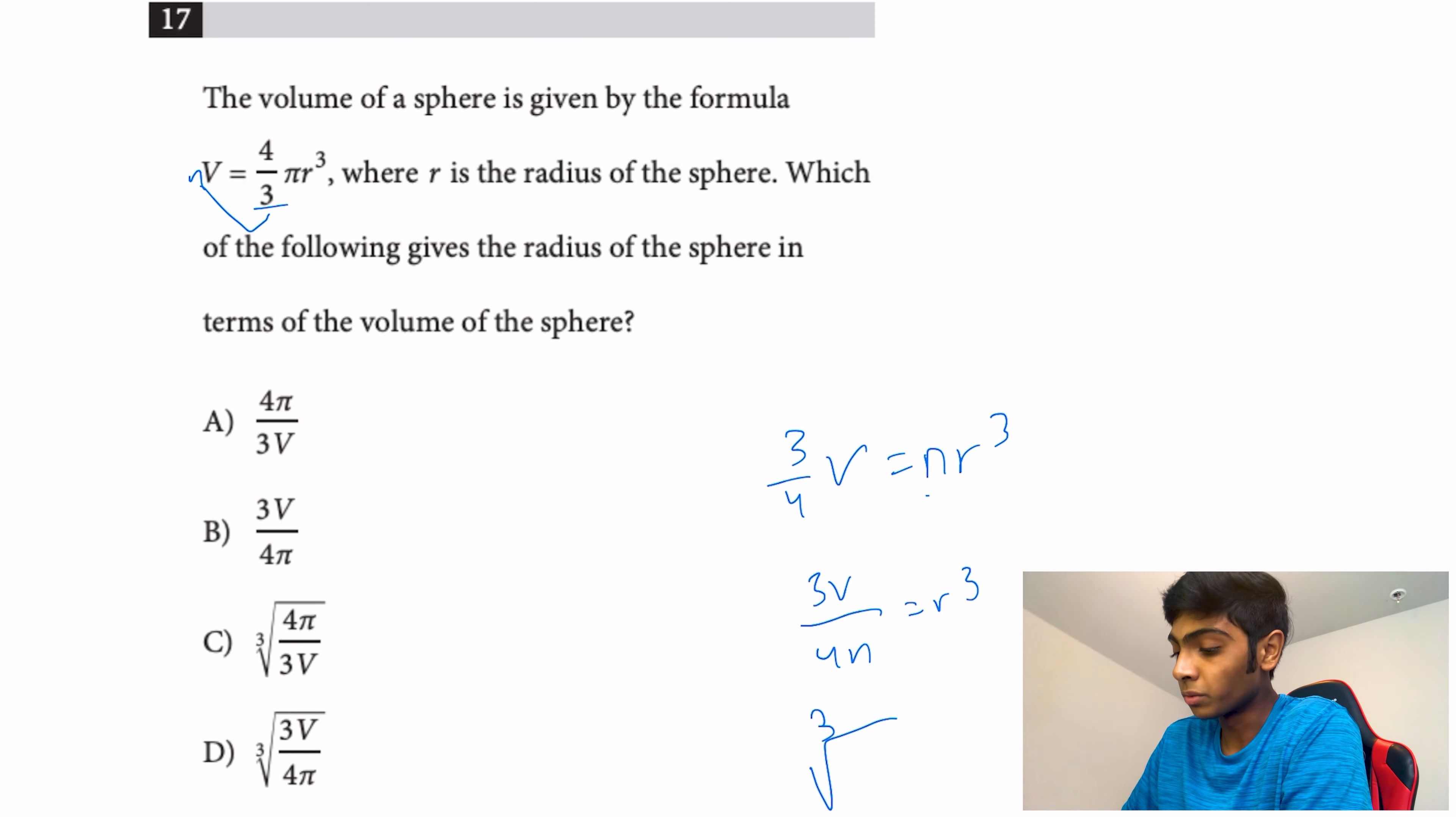Finally, I'll just take the cube root to isolate r, and we get the cube root of 3V/(4π) = r, and that lines up with answer choice D. That's going to be our answer.